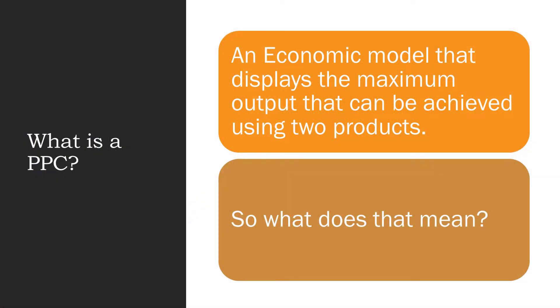A PPC is an economic model — it's a graph that shows the different combinations of output that can be made between two products. Many economics textbooks like to use guns and butter as the two products. What the two products are really doesn't matter; it's only meant to show that you have options that occur with two things.